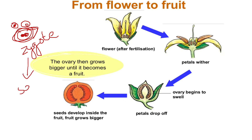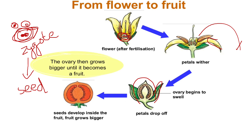In future, this zygote will become a seed inside the ovary of the flower. After fertilization inside the ovary, the pollen and ovule join together to make the seed. In the meantime, the petals will fall off, and the remaining part — the sepals — will remain. The ovary will swell up, becoming bigger and bigger, and finally this ovary will turn into a fruit. The seed is inside — the seed is the zygote.